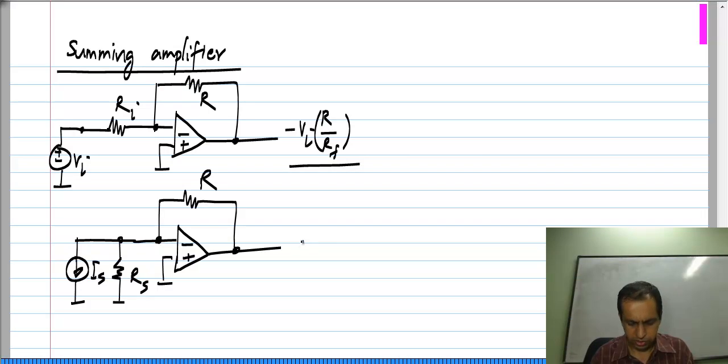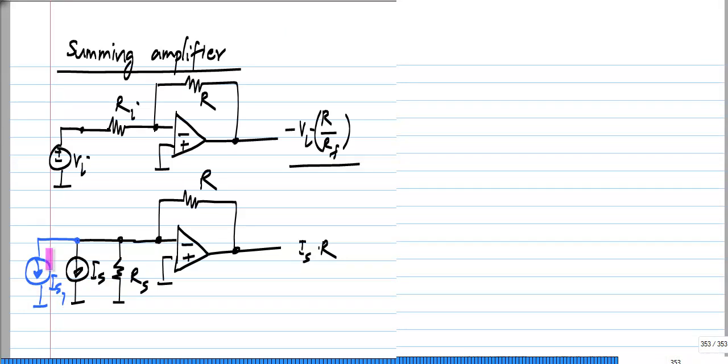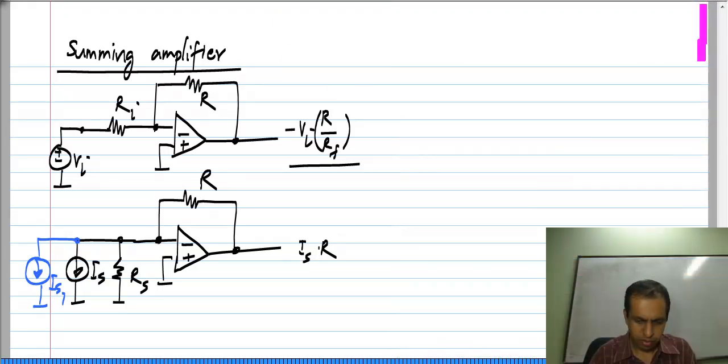So in this case the output is I S times R. Now you can easily imagine that if I have multiple current sources, let's say I S 1, and this R S could represent the effect of the resistance of this current source and that current source. The output would be I S R plus I S 1 times R. The two currents are effectively summed.